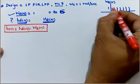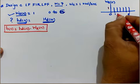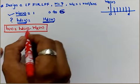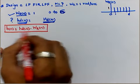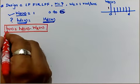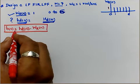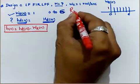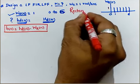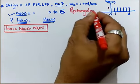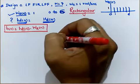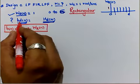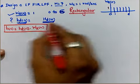Since W_R[n] = 1 throughout n = 0 to 6, multiplying hd[n] by 1 does not change it. So h[n] is directly equal to hd[n] in the case of the rectangular window design or window technique. Now let's proceed to calculate hd[n] from hd(ω).